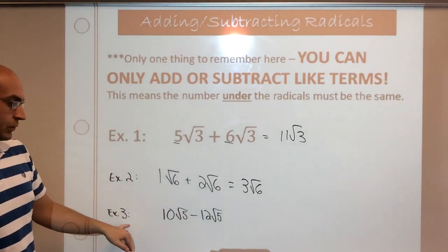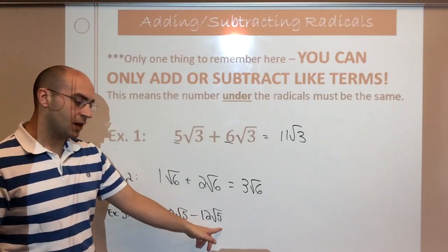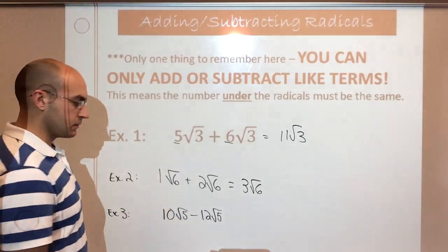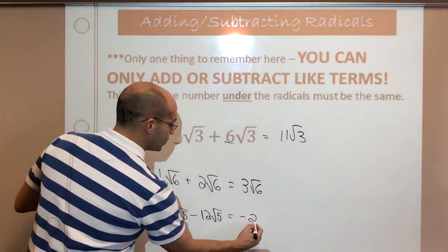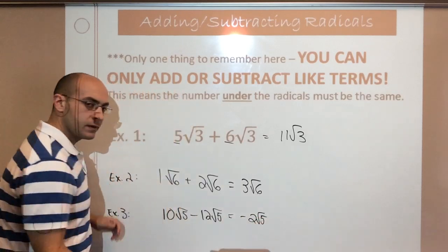And then here, do a little subtraction. Ten root five minus 12 root five. Simple operation rules. So I'm going to have negative two root five. No worries there.